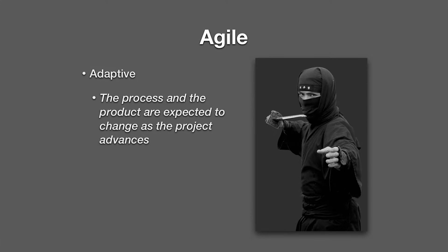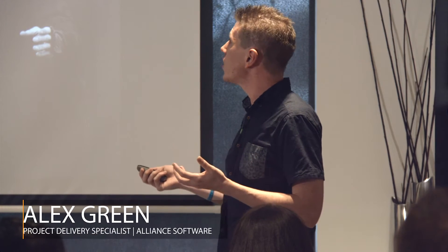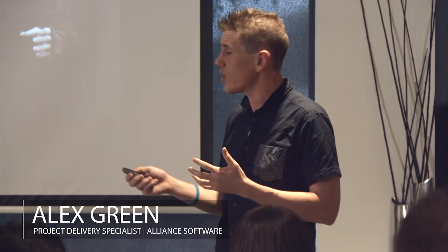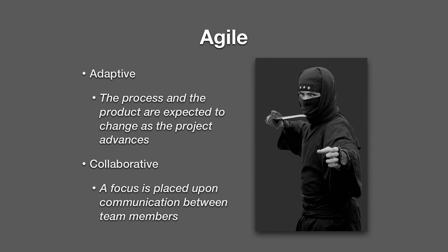Next, we're going to look at Agile. Agile is a very different type of process. It is adaptive. The very idea of Agile development is that the processes and the product are expected to change as a result of feedback. And it is collaborative. The idea is that you have a group of individuals coming together to produce an outcome, and they are going to talk and change things as they go and optimise. They are empowered to ask questions and to try and do things better. So, it is a very different type of project.